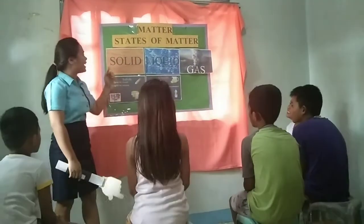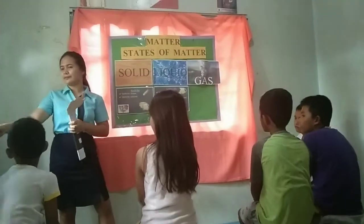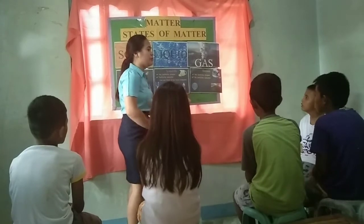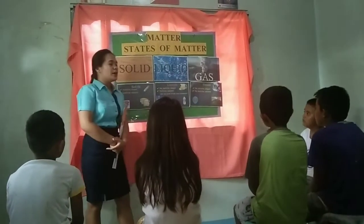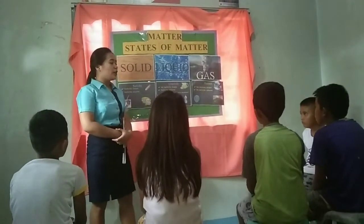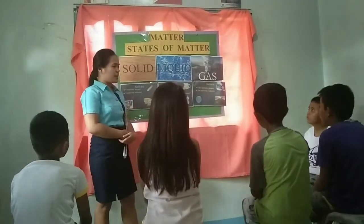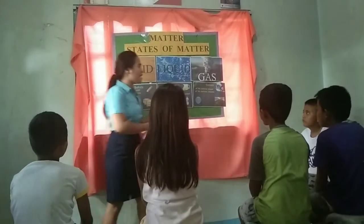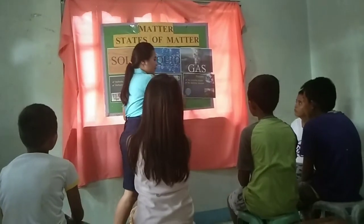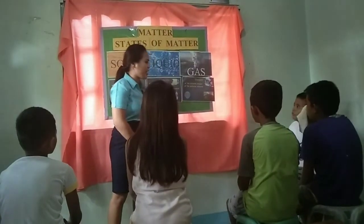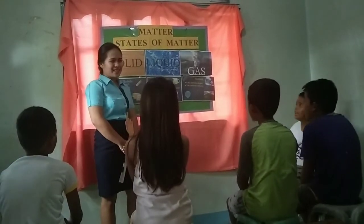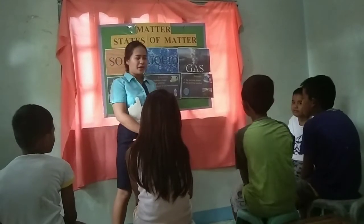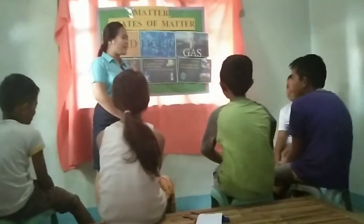So we understand what solid and liquid are. Now we will talk about gas. Gas has no definite shape and no definite volume. It will move freely into the air. You can feel the gas but you cannot touch it. It is similar to liquid, but when liquid is poured into a container it stays put, while gas will move freely inside the container, just like in a balloon. Air is an example of gas.